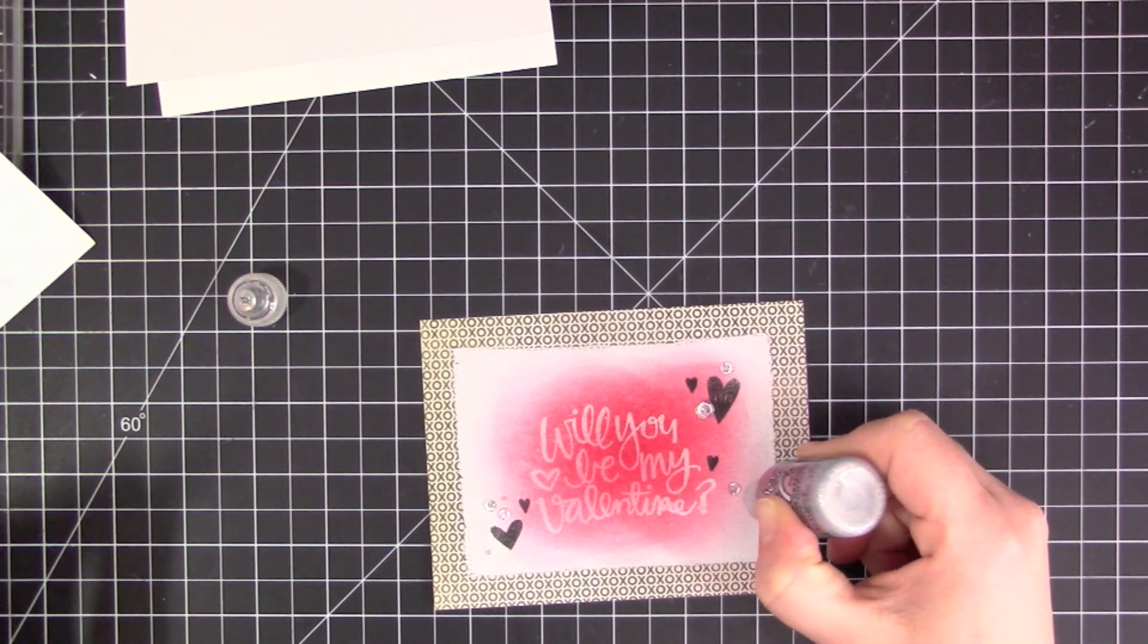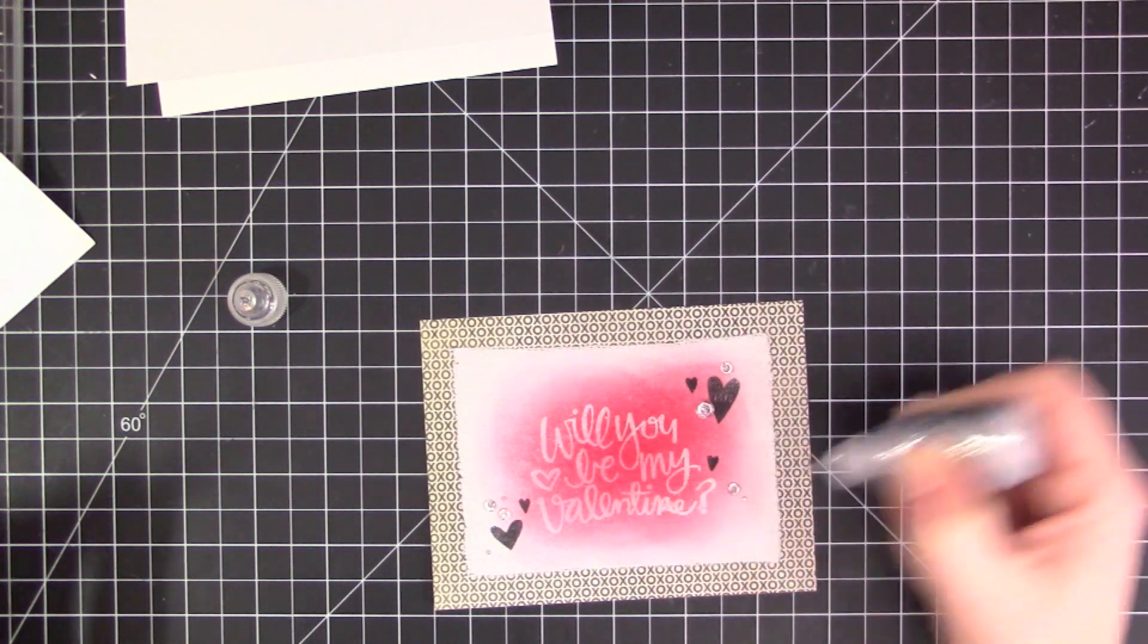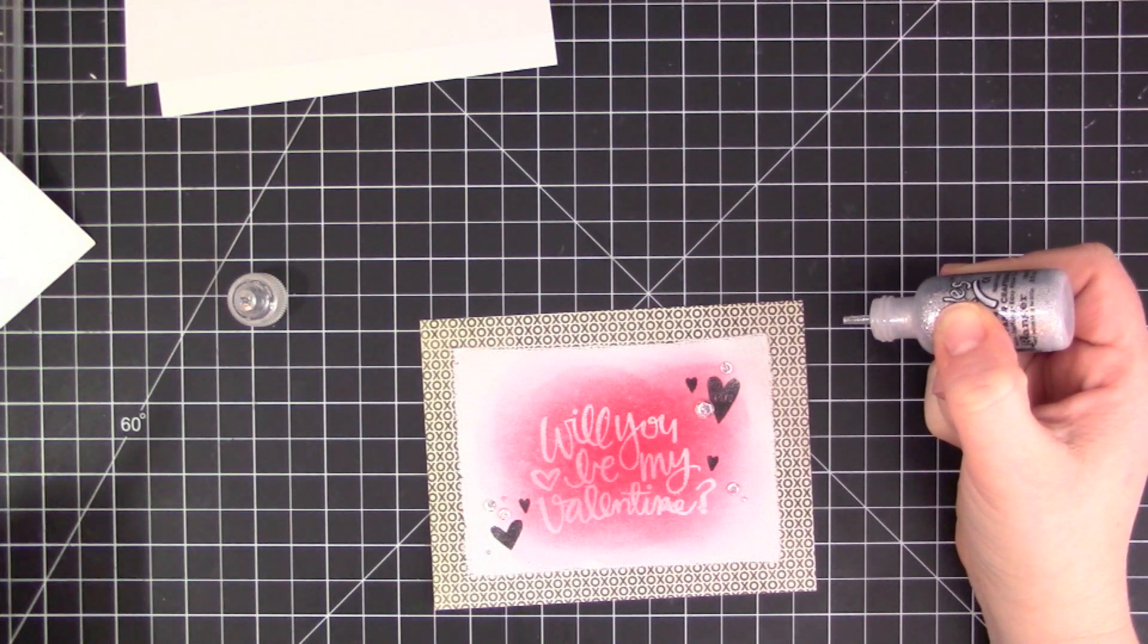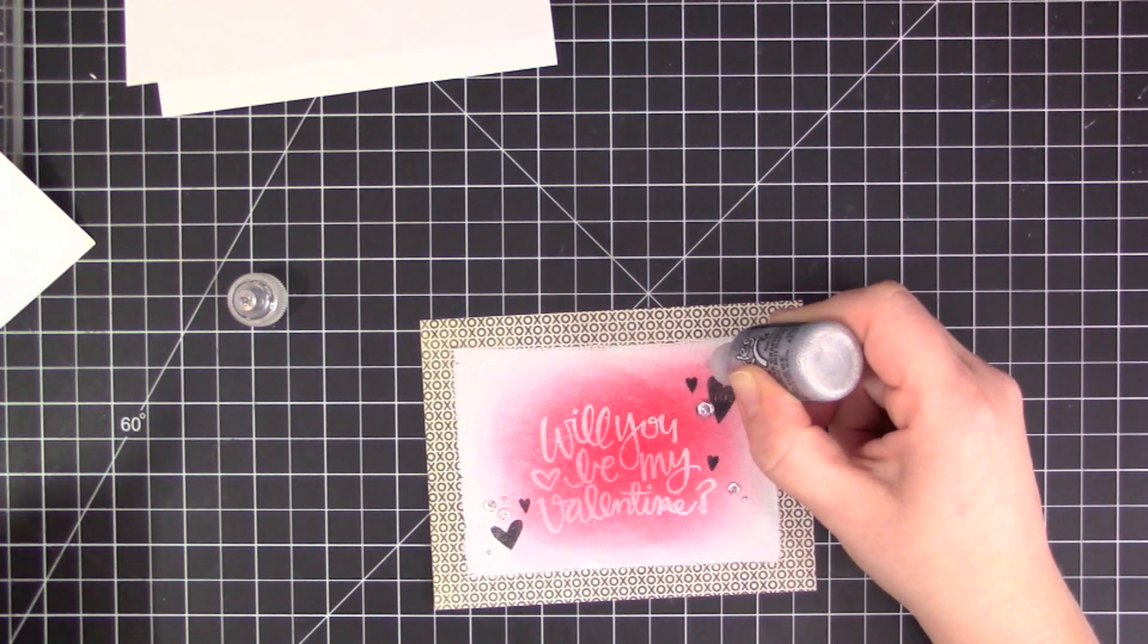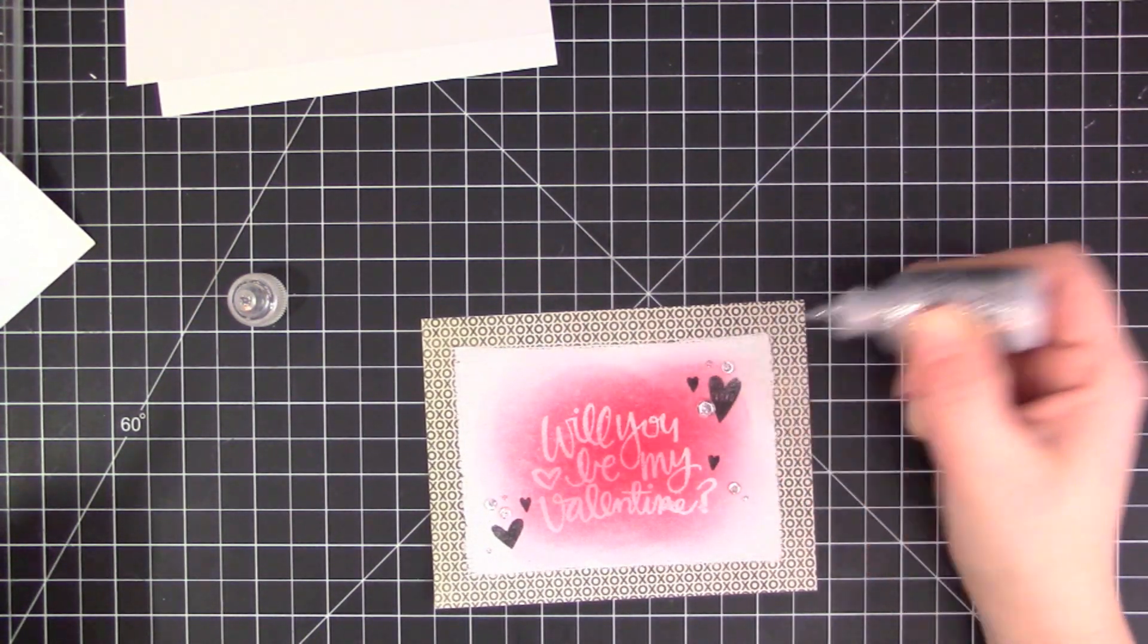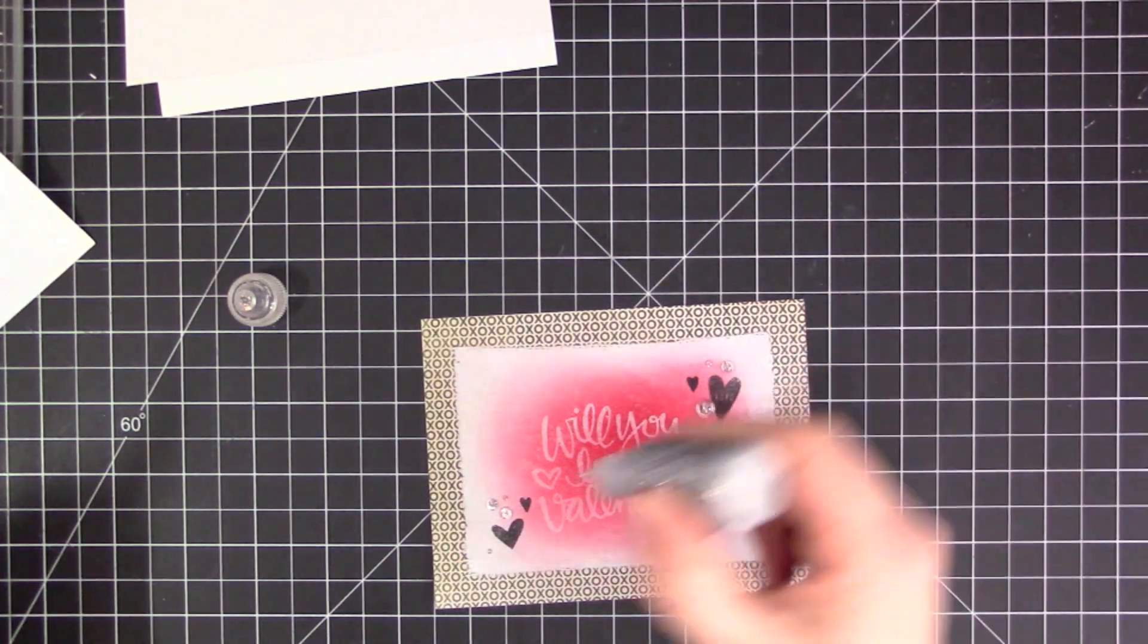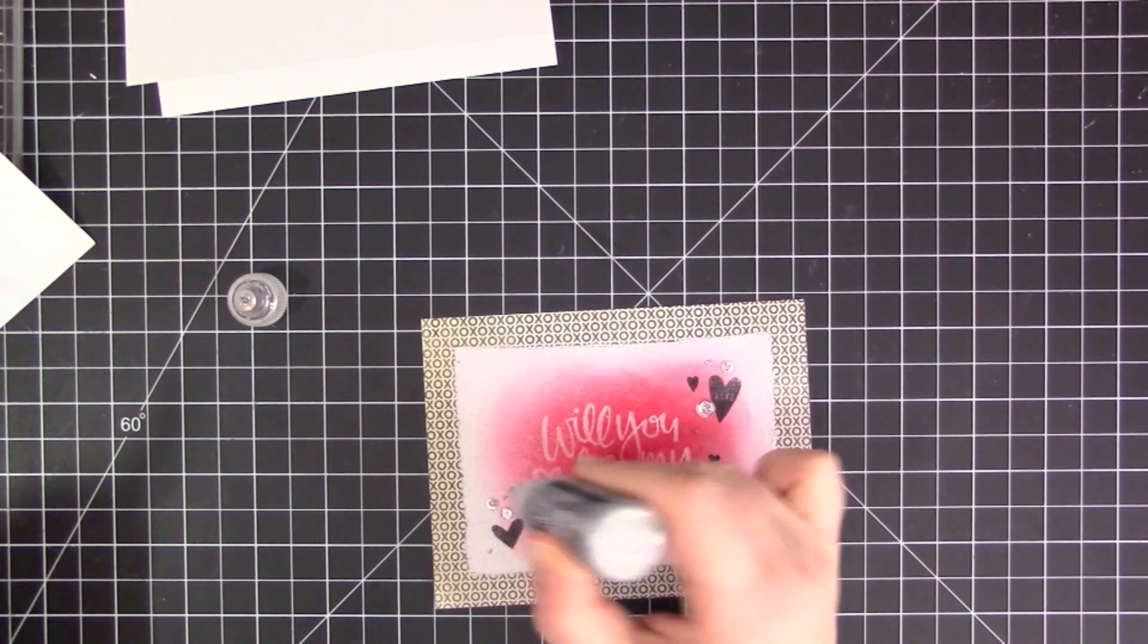I'm finishing them off with my go-to—you've seen me do it a million times. I like to use silver Stickles and put that in the center area of the sequins as well as on its own, which creates small little sparkly dots around the card front. Just another way to add a little bit of dimension.